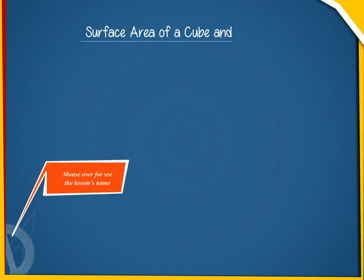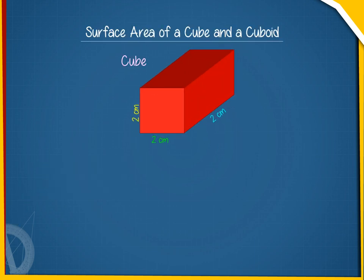Surface area of a cube and a cuboid. The sum of the areas of all the faces of a solid is called the surface area of the solid.